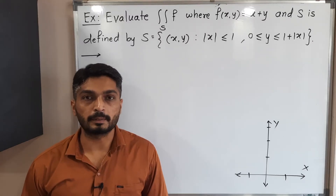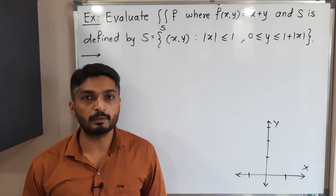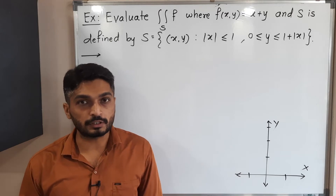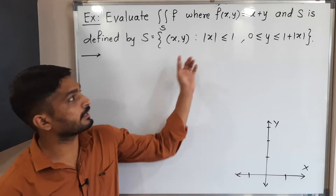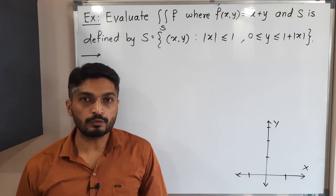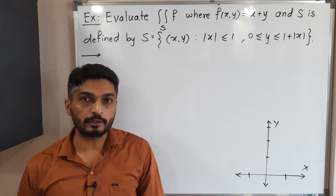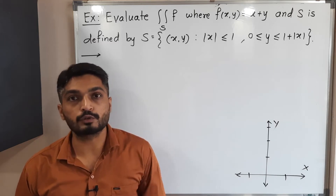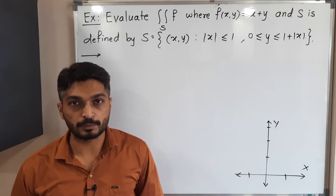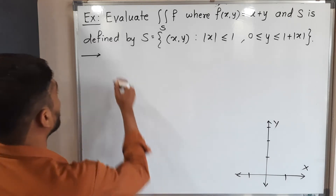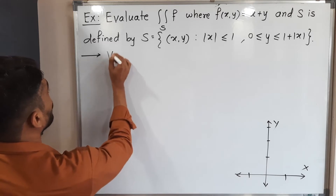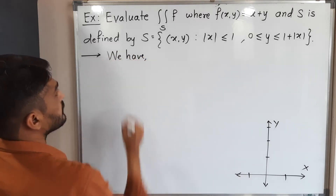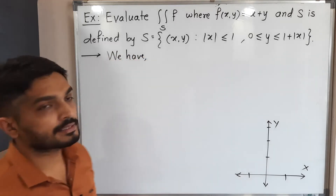Let us discuss this example. We have to solve a double integration where the region is given. First, we will try to find the region of integration, and after that we will solve the double integration. We have the condition: mod X less than or equal to 1.